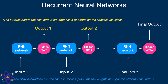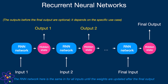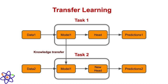Recurrent neural networks (RNNs) are designed to handle sequential data by maintaining a hidden state that captures information about previous inputs, enabling them to model temporal dependencies in data. RNNs are used in natural language processing, speech recognition, and time series analysis. However, they face challenges such as vanishing gradients and difficulty capturing long-term dependencies.